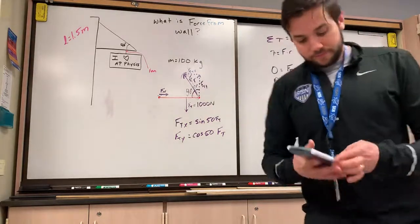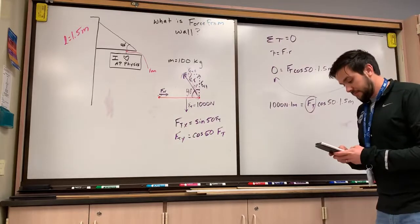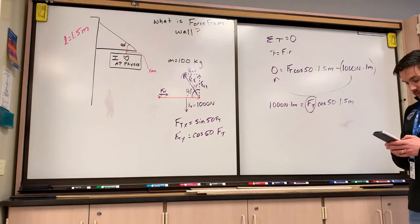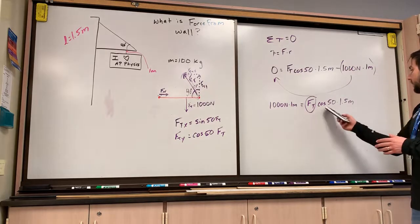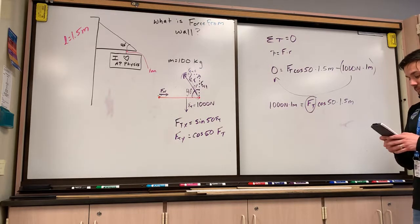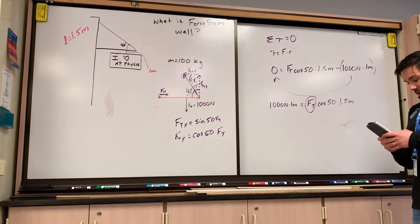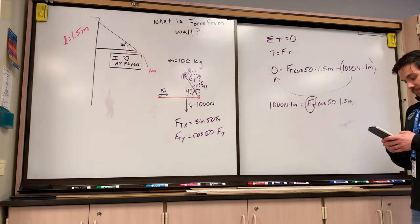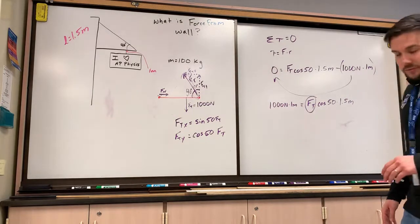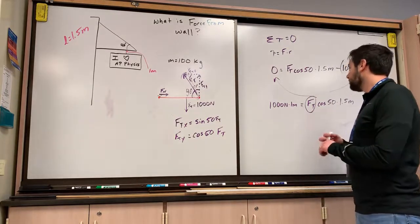I'm going to take 1,000. I'm going to divide by 1.5. And then I'm going to divide by cosine of 50, making sure that I am in degree mode when I do so. And I get 1,037 newtons.